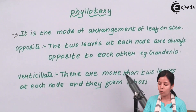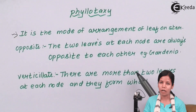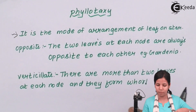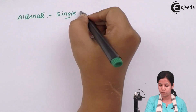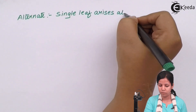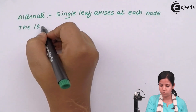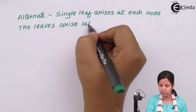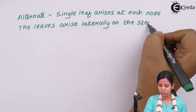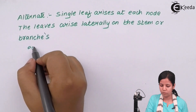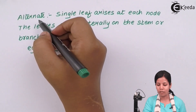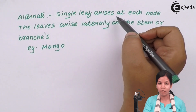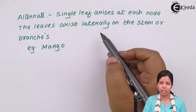In verticillate Phyllotaxy, more than two leaves are present at one node, and this group of leaves forms a whorl-like or flower-like structure. In alternate Phyllotaxy, there is a single leaf at each node, and these leaves arise laterally on the stem.